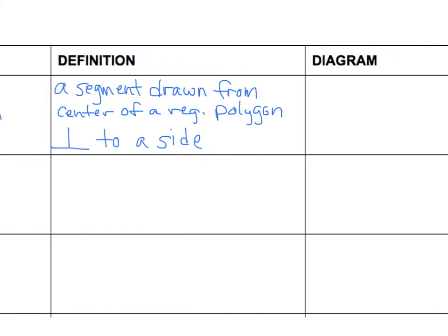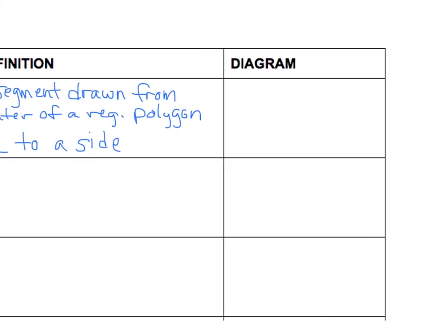As an example of what an apothem might look like on a diagram — this is just one example — let's say we're doing an apothem of a regular hexagon. It has to be drawn from the center. There's the center of my regular hexagon, and then we draw out from the center directly to the side at a 90-degree angle. That segment right there is your apothem.